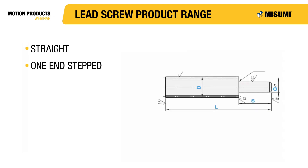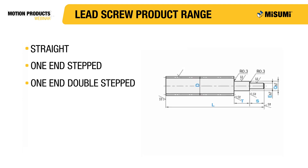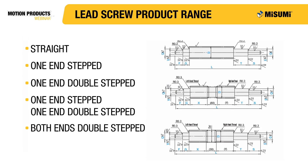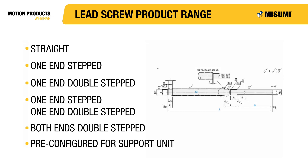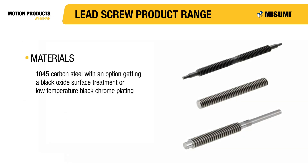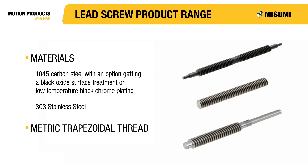Misumi sells several different types of lead screws: straight, one end stepped, one end double stepped, both ends stepped, both ends double stepped, and pre-configured for use with their support units. The shafts are available in either 1045 carbon steel — with an option for black oxide surface treatment or low-temperature black chrome plating — or 303 stainless steel. All Misumi lead screws have a metric trapezoidal thread.